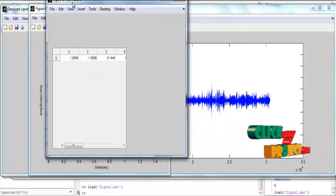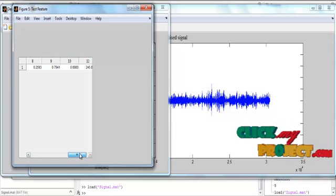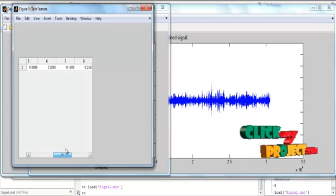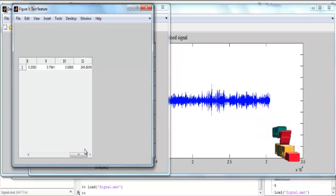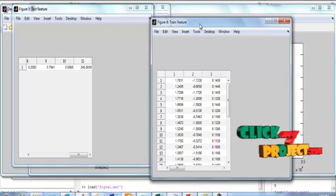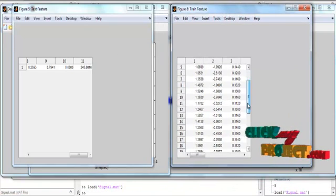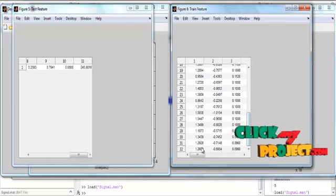Then the test feature values are shown in the table. These are the test feature values extracted from the signals. This is the features for the train values. The train values consist of 32 signal features.